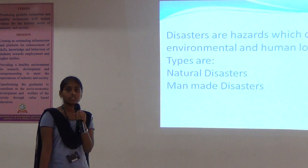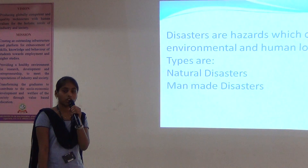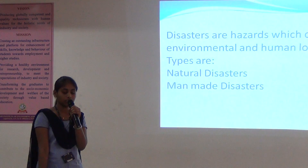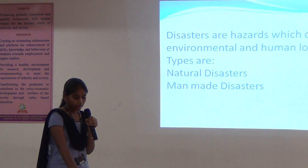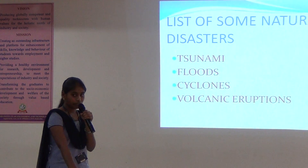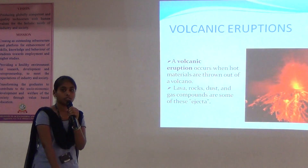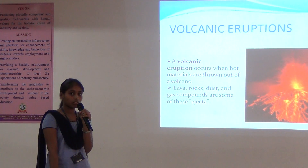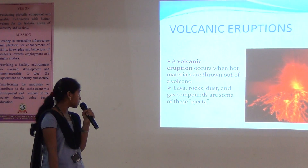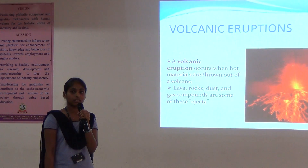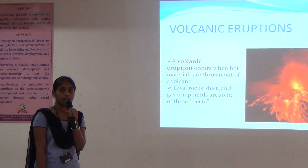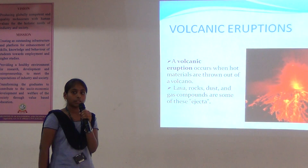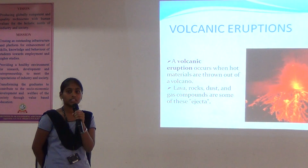Some of the natural disasters are tsunami, volcanic eruptions, cyclones, and flooding. First, I want to talk about volcanic eruptions. These eruptions come out of the volcano and occur due to dust particles and lava. Volcanic eruptions occur near the oceans.